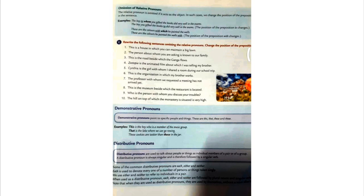Each is used to denote every one of a number of persons or things taken. We use either and neither to refer to individuals in a pair. When used as a distributive pronoun, each, either and neither are followed by plural nouns and singular verbs. So the noun must be plural and the verb is singular. Note that when they are used as a distributive pronoun, they are used by themselves without a noun after them.